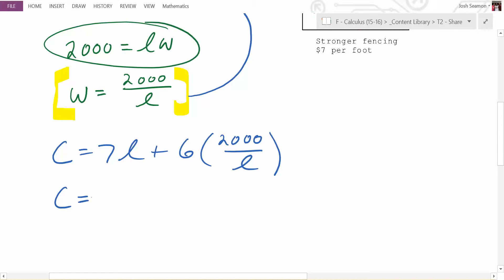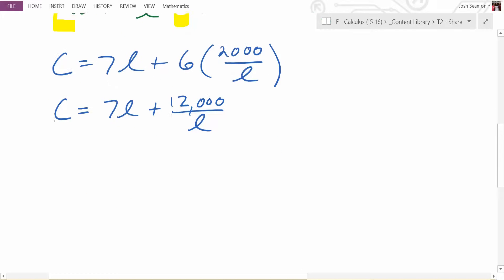Raise your hand, everybody. Let's have someone who hasn't spoken yet today. You can distribute. So it's going to be 7L plus what? Easier to differentiate. How could we rewrite that, Connor, to make it easier to differentiate? C equals 7L plus what?